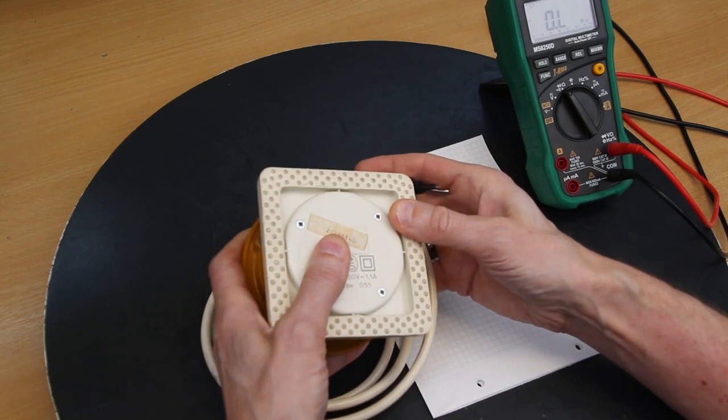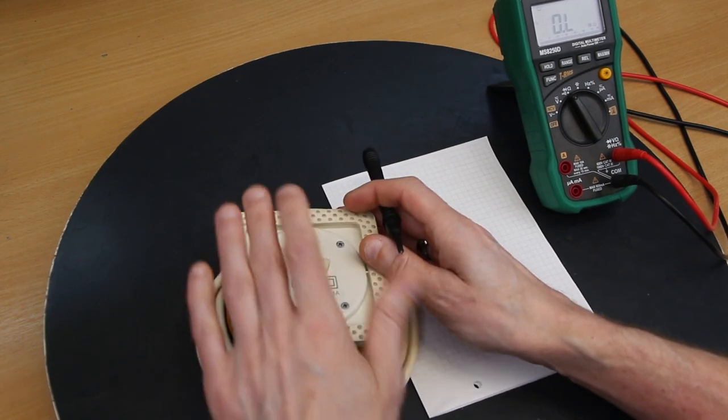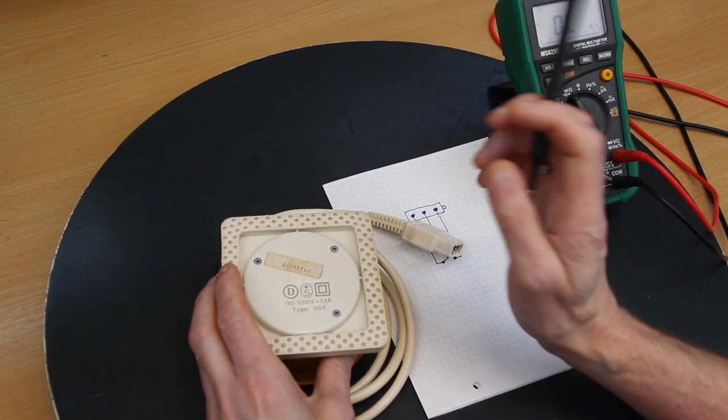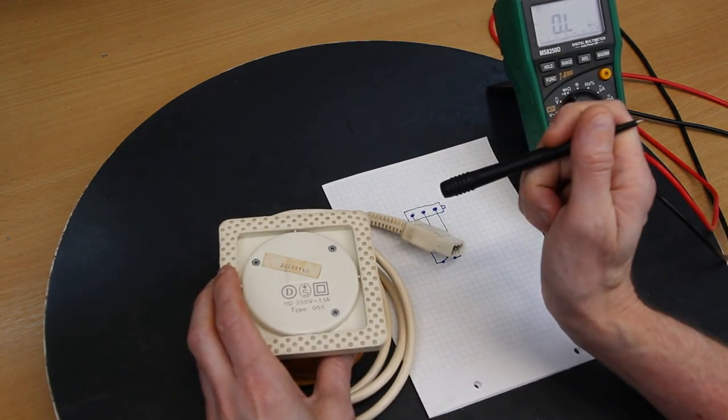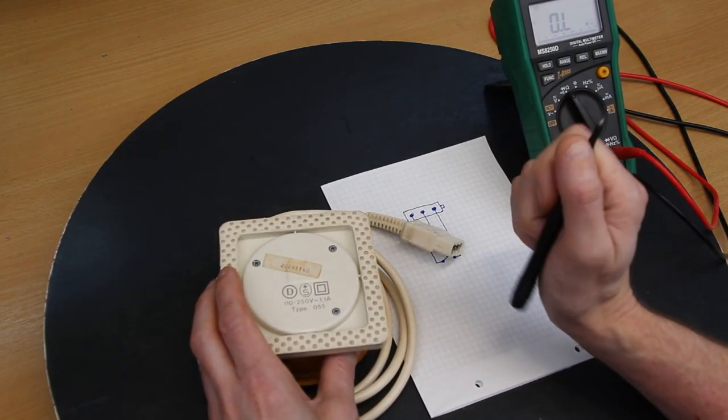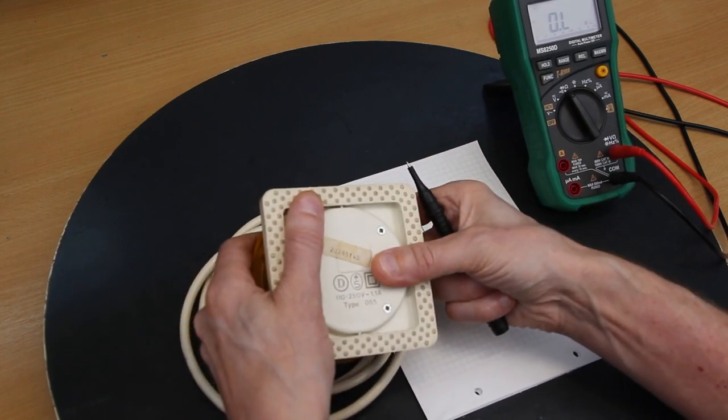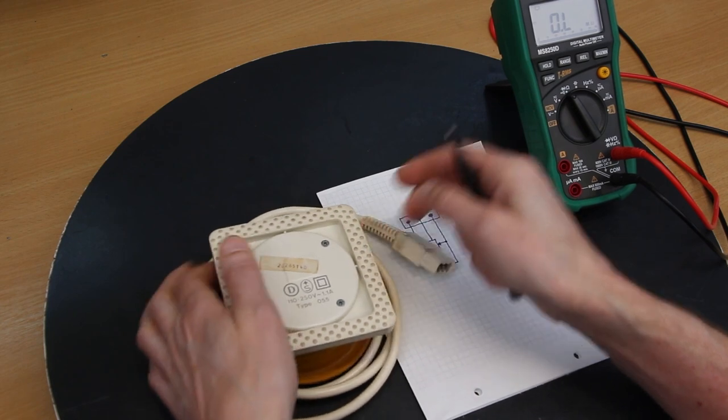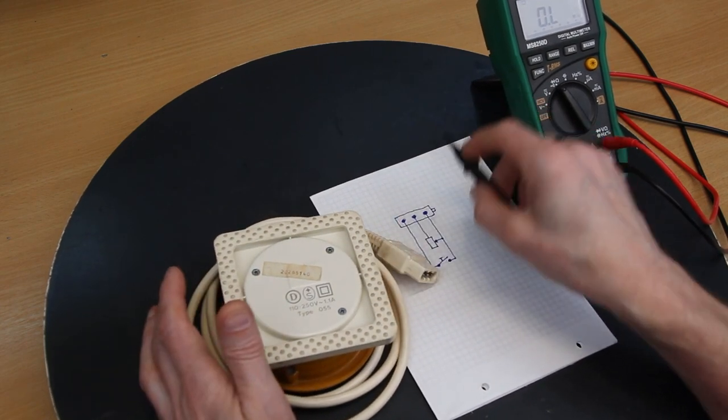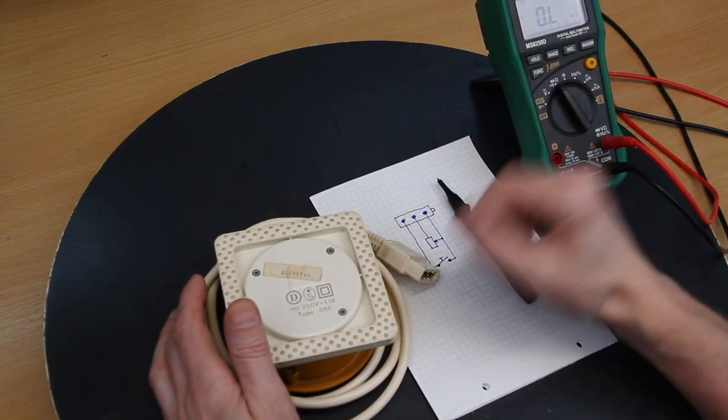So when you hear the click, then the main voltage is going to the speed controller. And when you further press, you have the variable resistor which is controlling the speed of the motor.